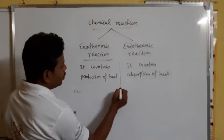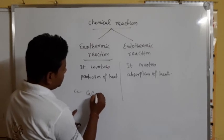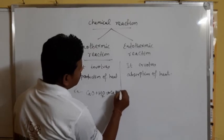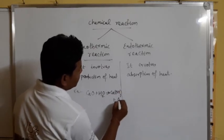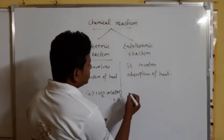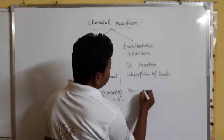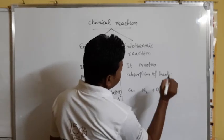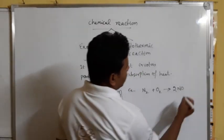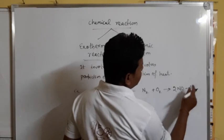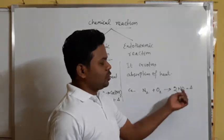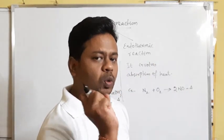For an example of exothermic reaction, we have already read that when calcium oxide reacts with H2O it forms calcium hydroxide and heat is also produced, so this reaction is exothermic. As an example of endothermic reaction, when nitrogen reacts with oxygen it forms nitrogen oxide and heat is absorbed, which is why I have written minus heat.